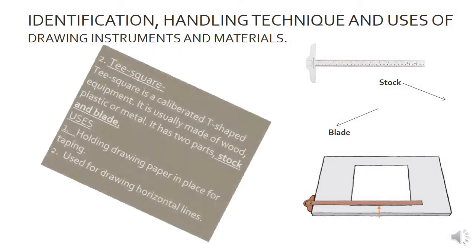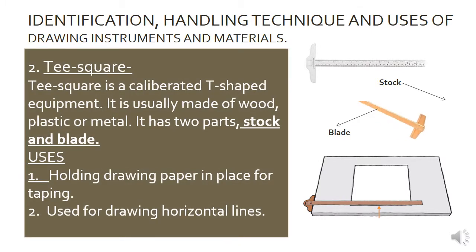T-square is a calibrated T-shaped equipment usually made of wood, plastic, or metal. It has two parts: the stock and the blade. Uses of T-square: 1. Holding drawing paper in place for taping. 2. Used for drawing horizontal lines.